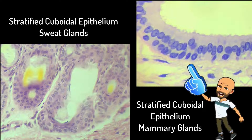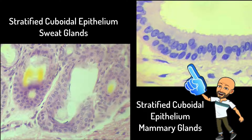The cell structure is the same as seen in simple cuboidal epithelia, in that the cells are box-shaped, with the same width as height, and still contain those large, darkly stained nuclei.